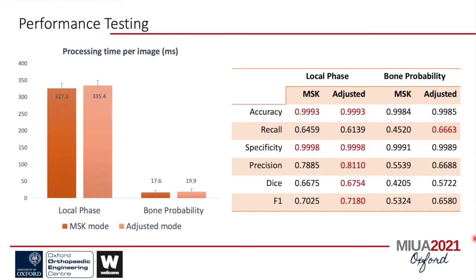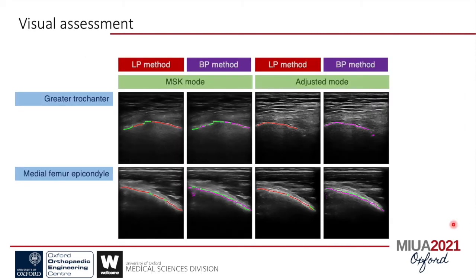Here are the results comparing the two non-machine-learning methods. The local phase method took 327.2ms and 335.4ms to segment one image acquired with the MSK mode and adjusted mode, respectively. However, the bone probability method only took 17.6ms and 19.9ms. The difference between acquisition modes was not as significant as the difference between algorithm methods. Unfortunately, although the new method is quicker, it only performed better than the previous method in recall metrics when data was acquired with the adjusted mode.